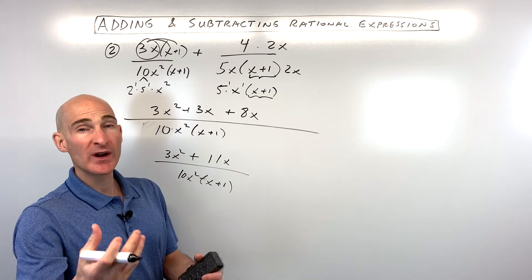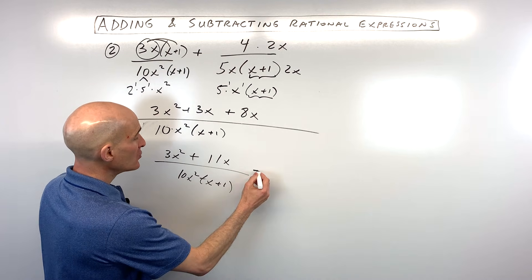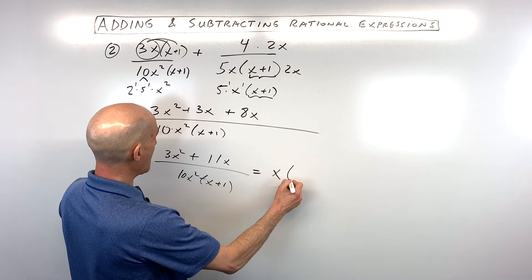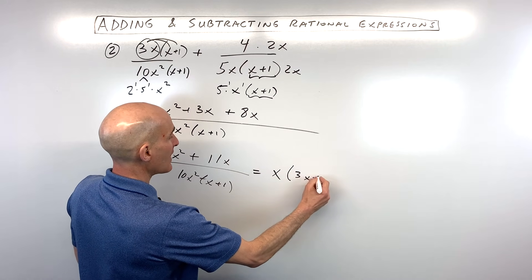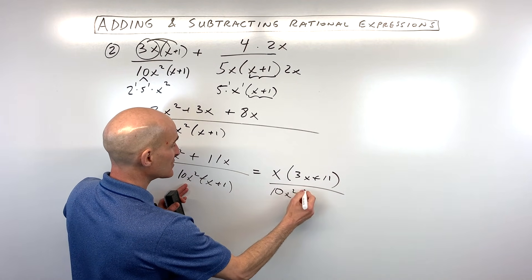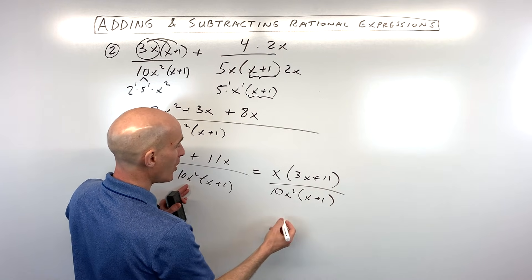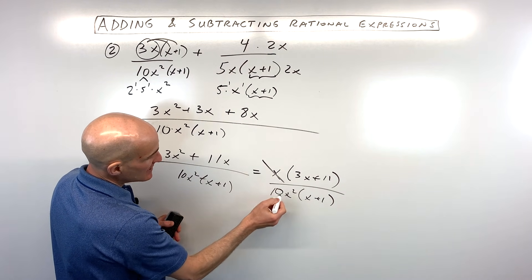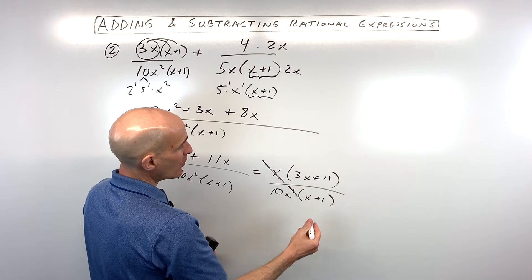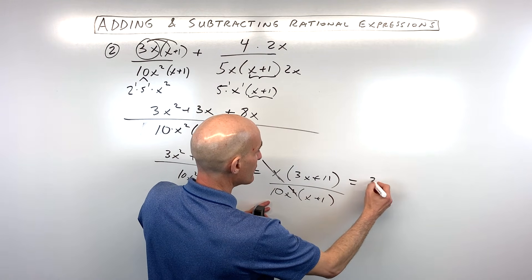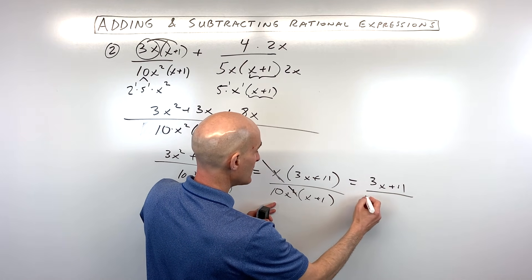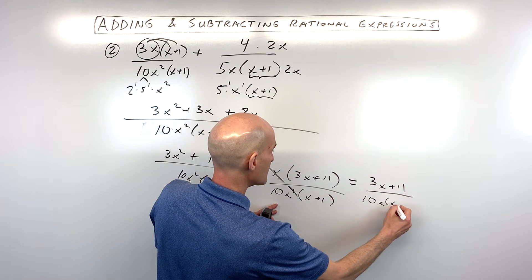Remember, you want to try to factor the numerator. We can see there's an x in common in both terms, so factor out an x, giving x times 3x plus 11, all over 10x squared times x plus 1. One of the x's in the numerator cancels with one of the x's in x squared, leaving one x. So our final result is 3x plus 11, all over 10x times x plus 1.